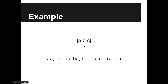As you can see, repetition is allowed — for example, aa uses a twice, and similarly bb and cc. If instead of 2 this were 3, then we would also allow combinations like aab, aac, bbb, ccc, aab, and so on — all three-character permutations with repetition.